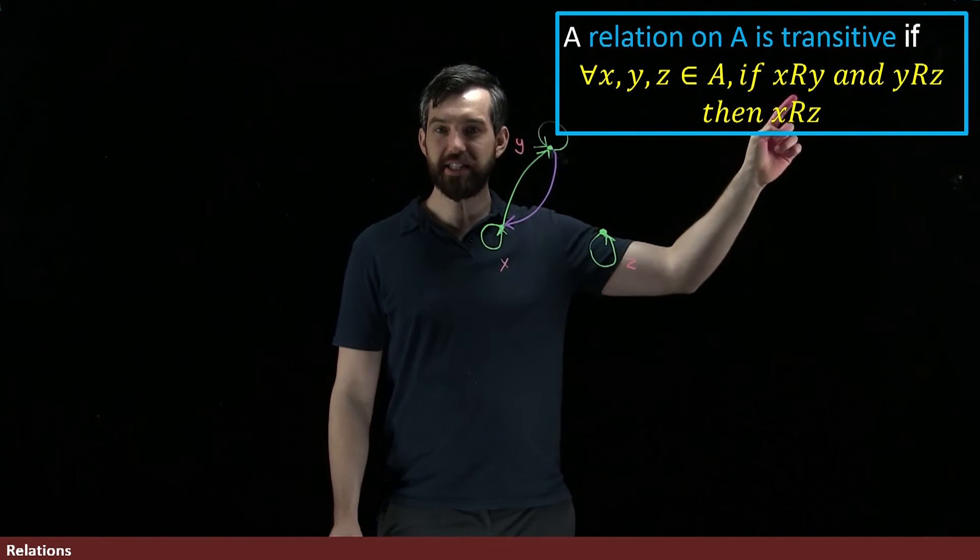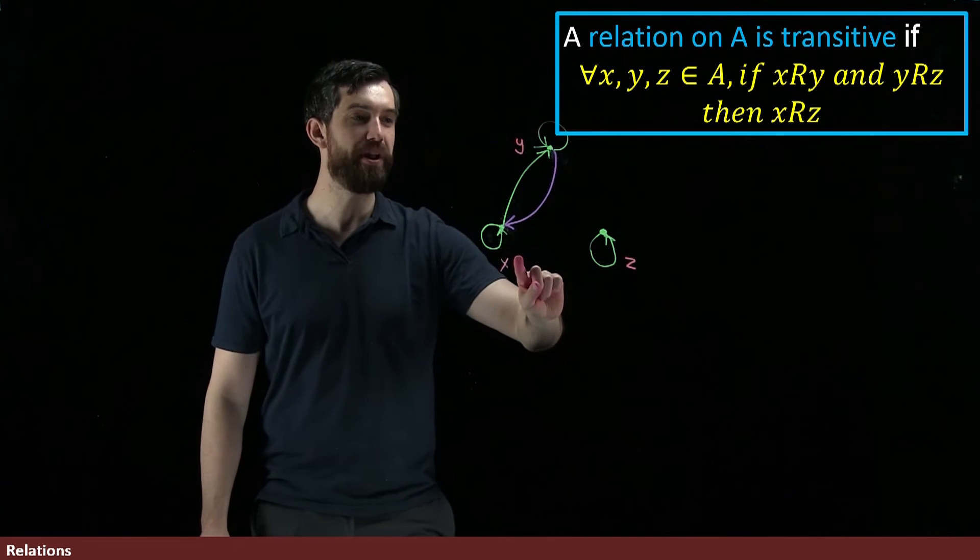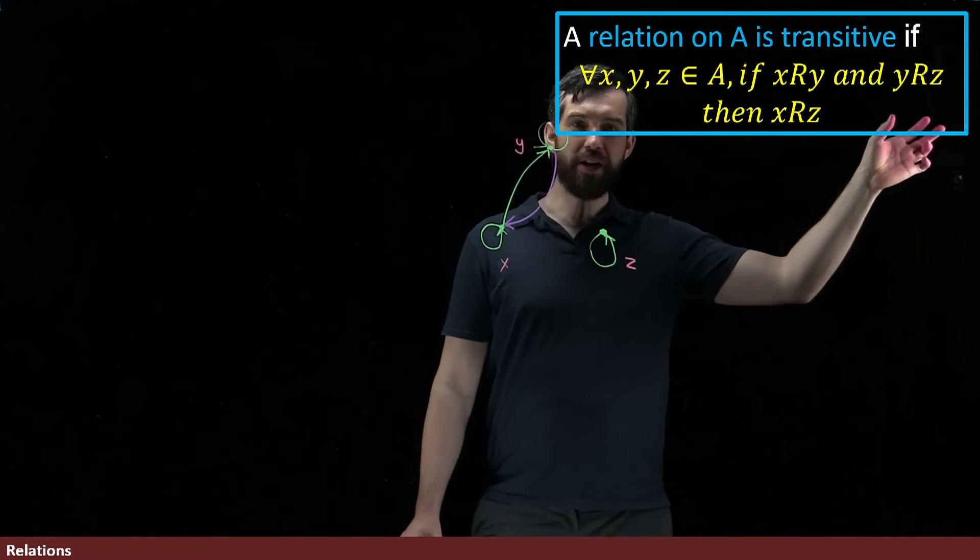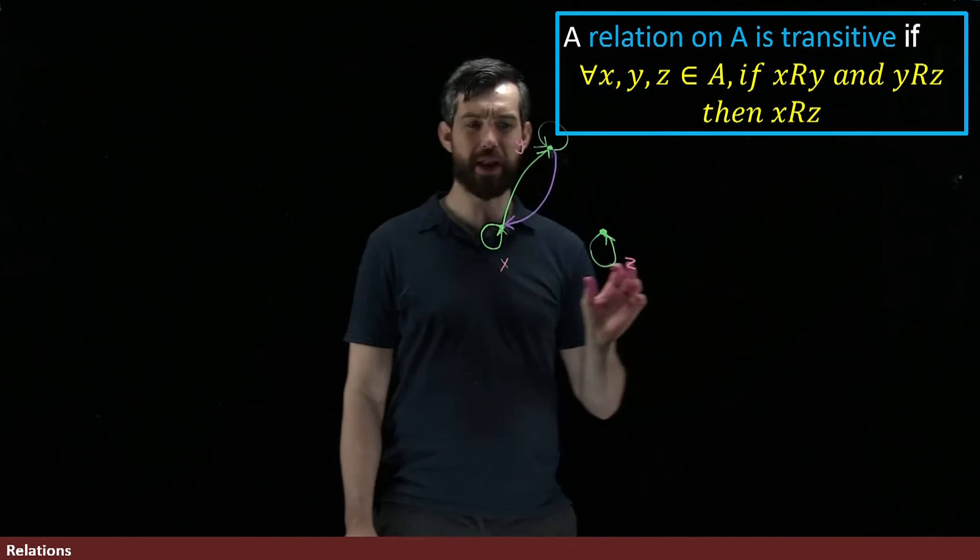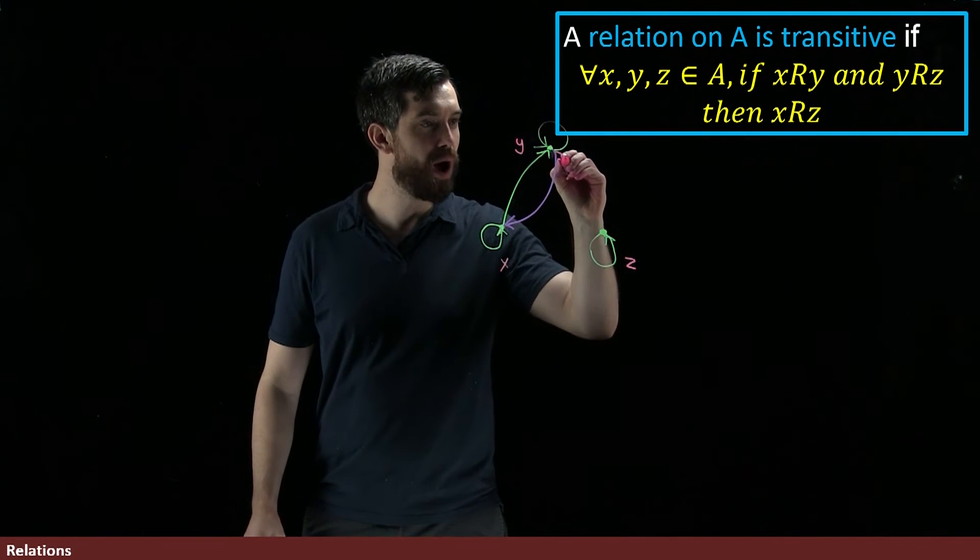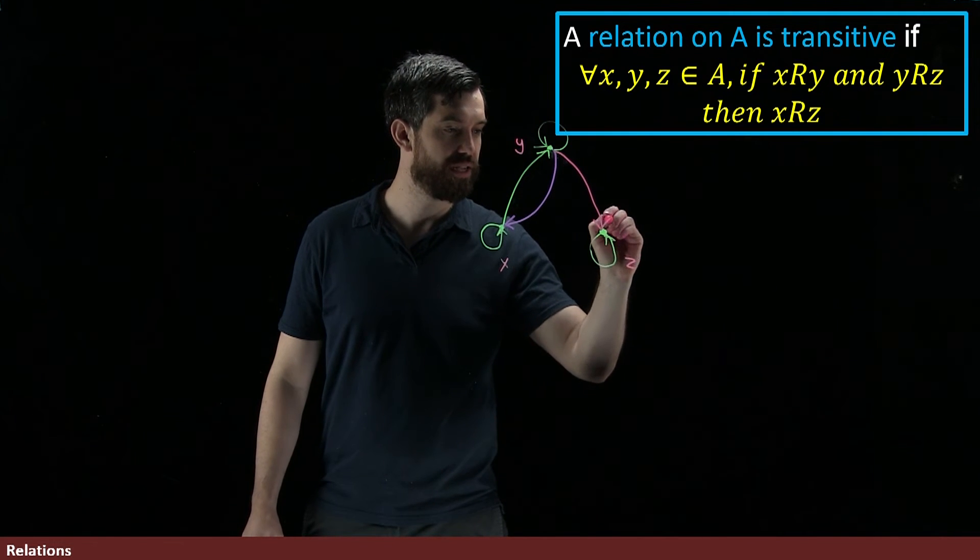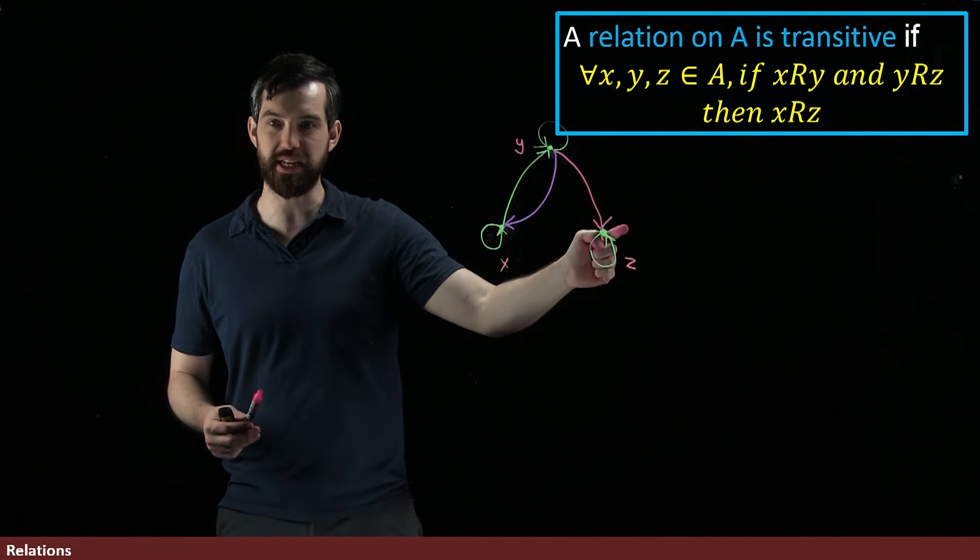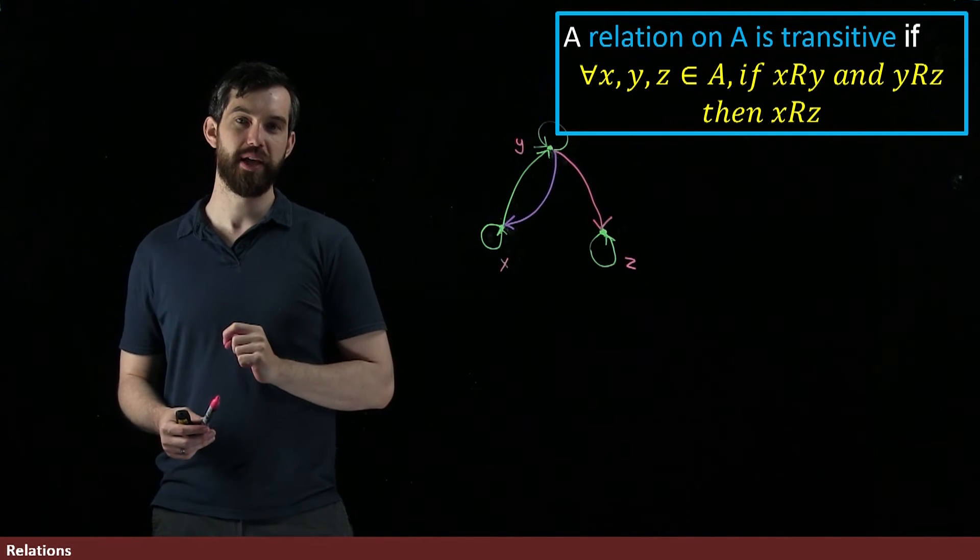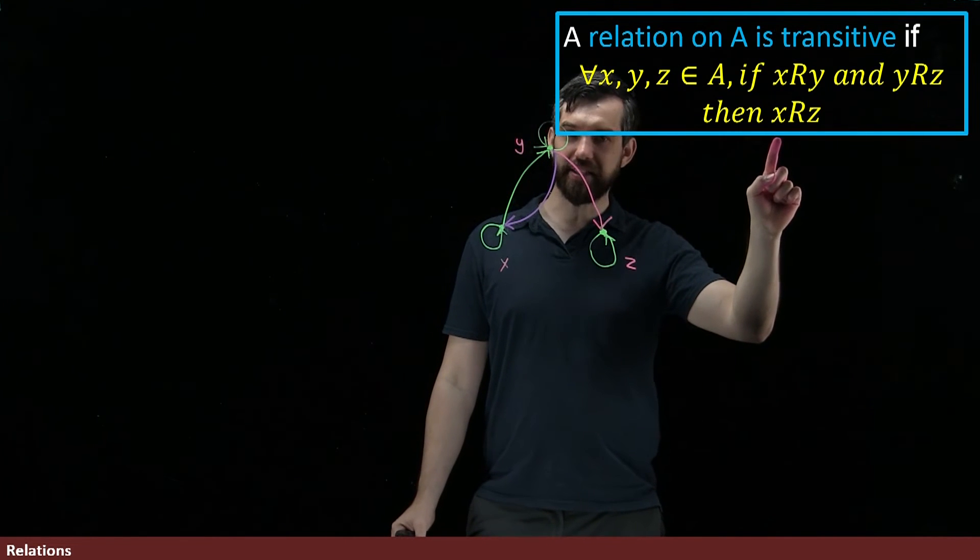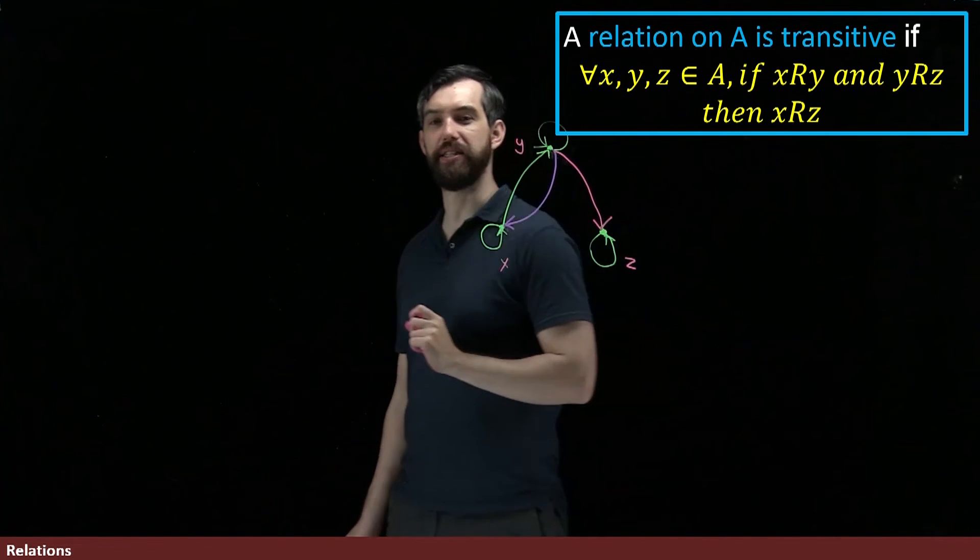And what you have is the following. You've got that x is related to y. I've already got that. X is related to y, good, matches. And y is related to z. Well, I don't yet have that drawn in, so let me put it on. I'm going to say y is related down here to z. So x goes to y, I've got a relation there. Y goes to z, I have a relation there. Then what I have is that x is directly related to z.